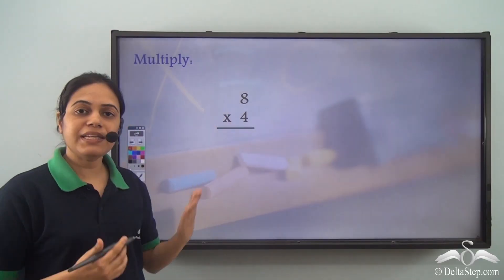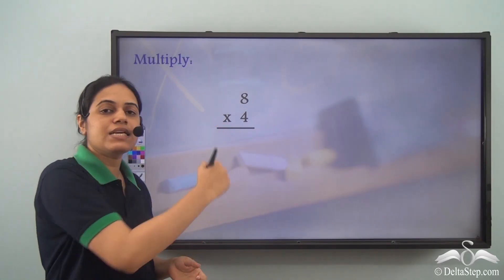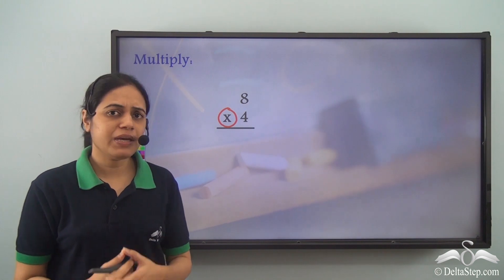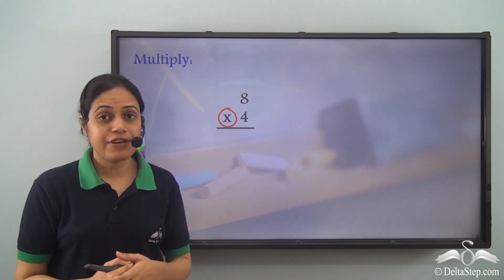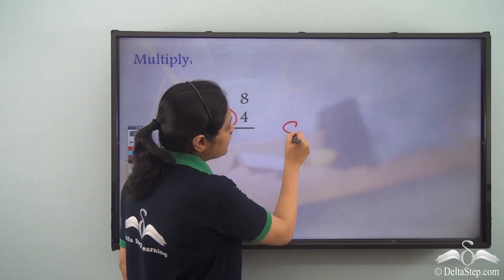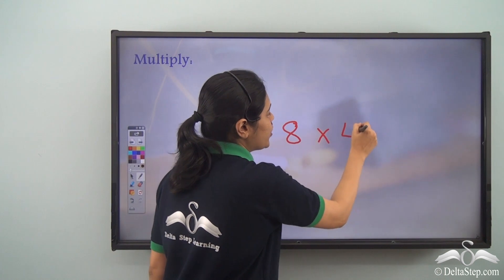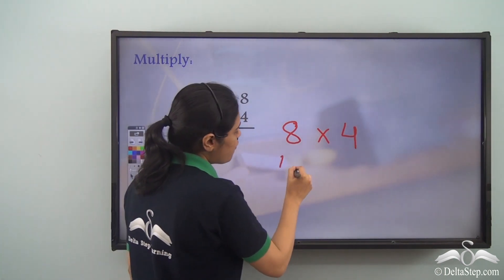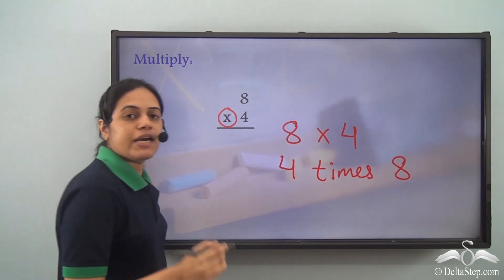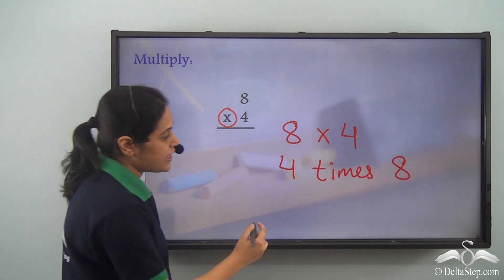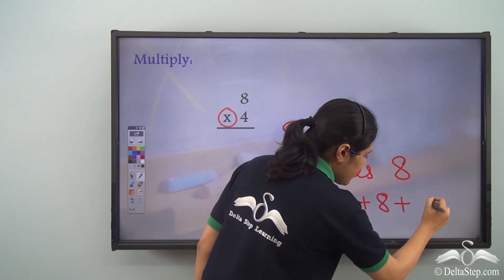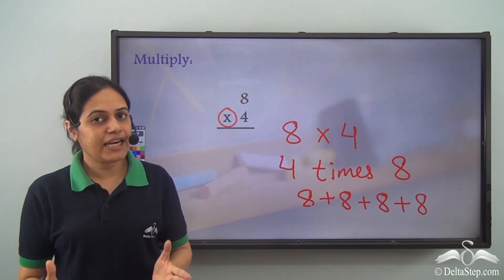We need to multiply these two numbers: 8 into 4. I know that this is the multiplication symbol. What do we mean by multiplication? Multiplication is repeated addition. So 8 into 4 means 4 times 8, that is 8 plus 8 plus 8 plus 8 — 8 added 4 times.